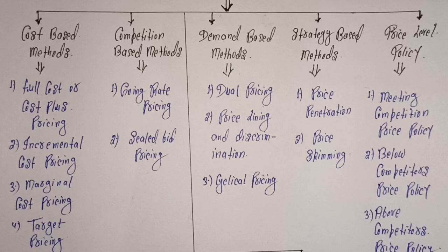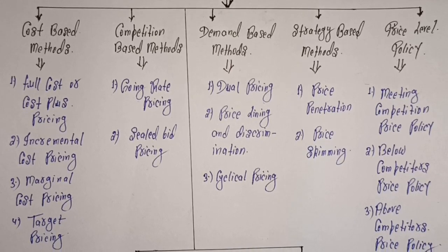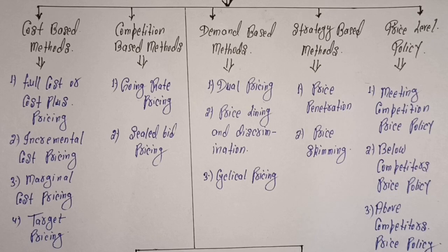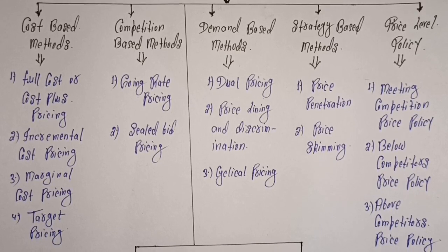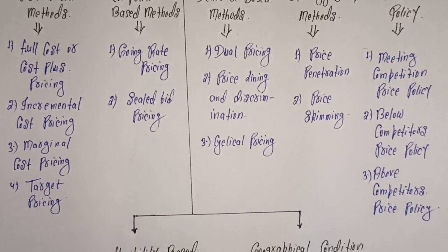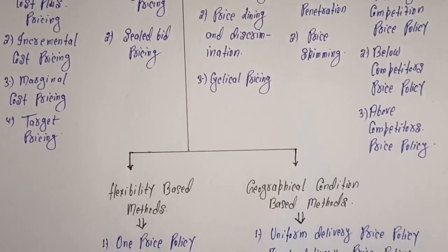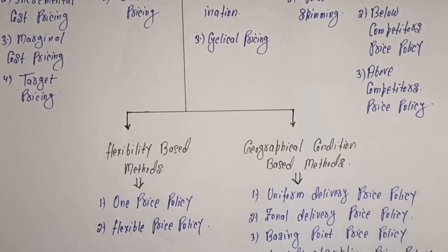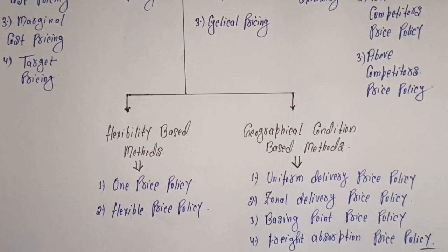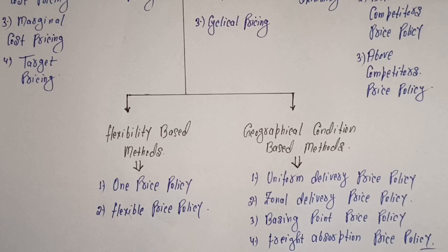In demand-based methods, we will discuss three methods: dual pricing, price lining and discrimination policy, and cyclical pricing. In strategy-based methods, we will discuss price penetration and price skimming. In price level policy, we will discuss meeting competitive price policy, below competitors' price policy, and above competitors' price policy. In flexibility-based methods, we will discuss one price policy and flexible price policy. In geographical condition-based methods, we will discuss uniform delivery price policy, general delivery price policy, basing point price policy, and freight absorption price policy.